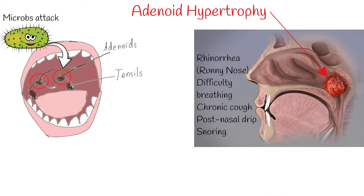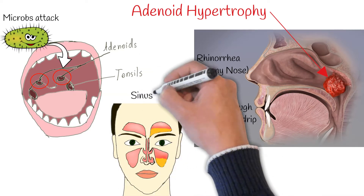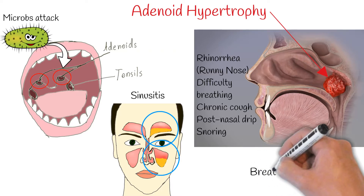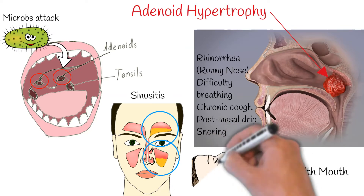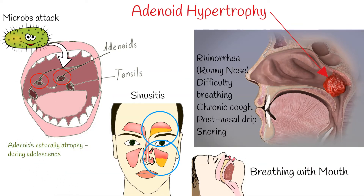Post-nasal drip can also develop, along with snoring and sleep-disordered breathing in children. If the nasal obstruction is significant, the patient can suffer from sinusitis and may complain of facial pain or pressure. On physical exam, the patient will often breathe through the mouth, have a hyponasal character to the voice, and may have the facial characteristics known as adenoid facies, which include a high-arched hard palate, increased facial height, and mid-face retrusion.